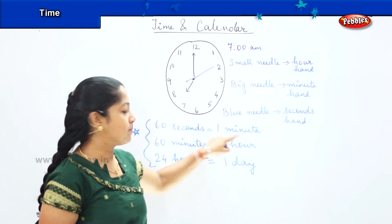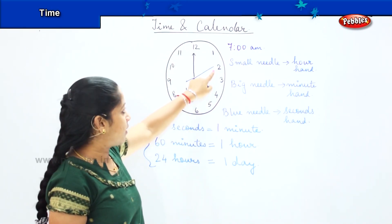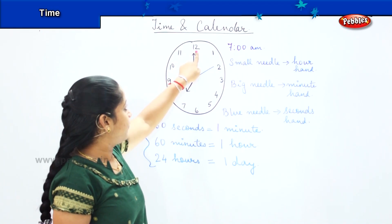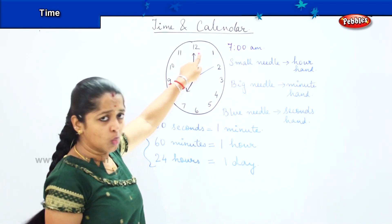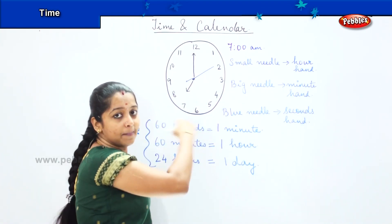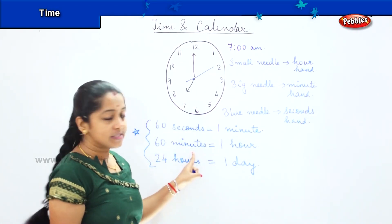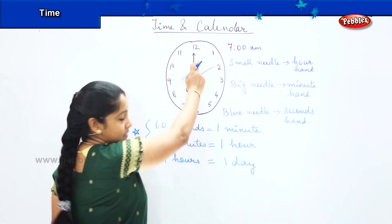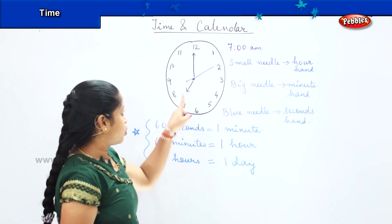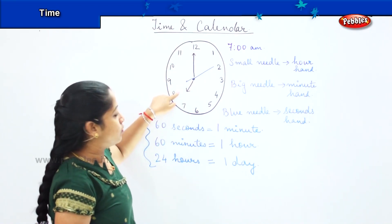As I said, 60 seconds make one minute — meaning, starting from twelve, once the second hand completes one full circle and returns to twelve, that makes one minute. And once it keeps completing circle after circle, then this minute needle will move slowly. Once 60 minutes are completed, it makes one hour — meaning this big needle, once it completes the entire rotation, becomes one hour. So starting from twelve, once this needle completes the full circle and returns to twelve, my hour hand moves from 7 to 8.